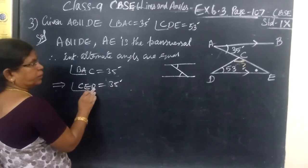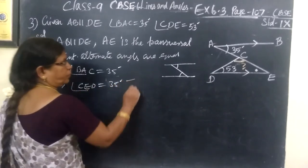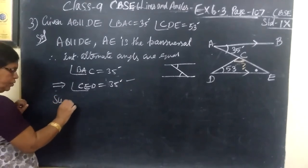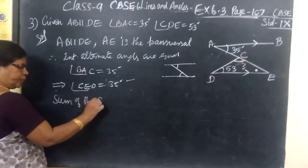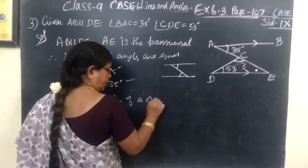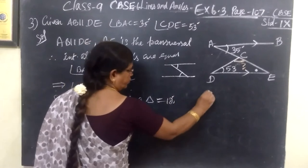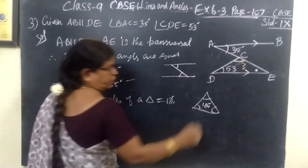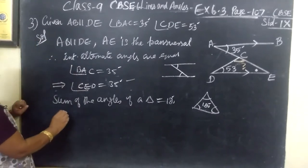Now we know CED. Definitely, we can find angle DCE, and we know the sum of the angles of a triangle equals 180 degrees. In a triangle, if you add all angles, you get 180 degrees.